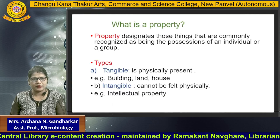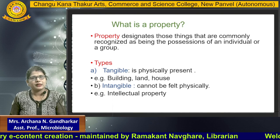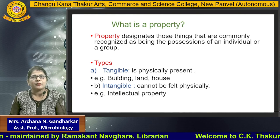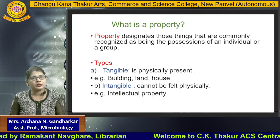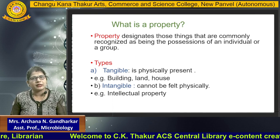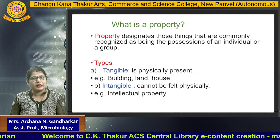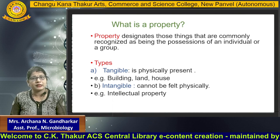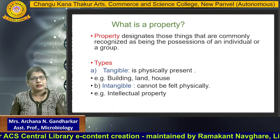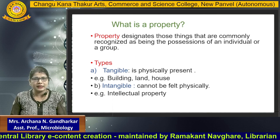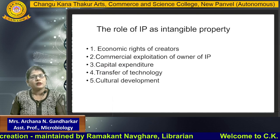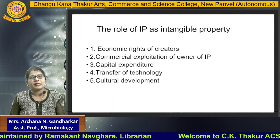Different types of intellectual property. So what is property? Properties are those things that are commonly recognized as being the possession of an individual or a group. There are two types of properties: one is tangible property and the second is intangible property. Tangible property means it is physically present — examples include buildings, land, and houses. Intangible property cannot be felt physically but it is present. Examples of intangible properties are intellectual property.